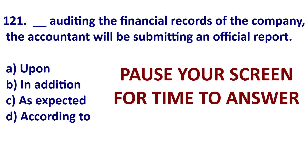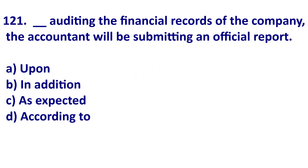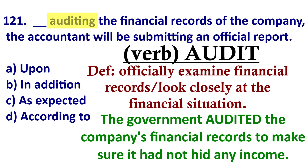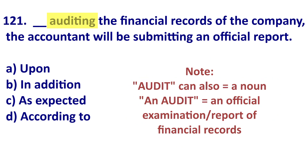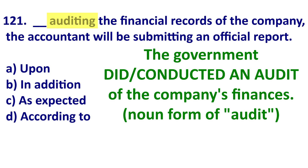Now let's look at another TOEIC question — this one's very difficult. Before we start, let's review some key vocabulary. The verb 'audit' means to officially examine financial records or to look closely at a financial situation. Example: the government audited the company's financial records to make sure it hadn't hidden any money. 'Audit' can also be a noun — it is an official examination or report of financial records.